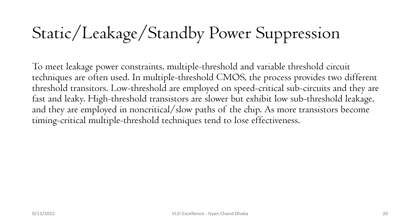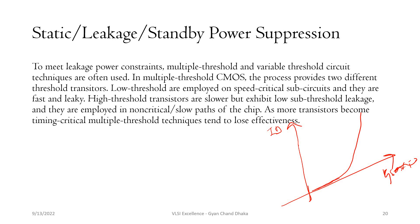Now, let us see static or leakage or standby power suppression. There are many sources of leakage power dissipations. Here, we will consider the sub-threshold leakage. Let us understand the input characteristics of a transistor. If we draw the input characteristics, we plot ID versus VGS. The characteristics show the threshold voltage, where ideally the transistor starts conducting when the gate voltage reaches the threshold voltage. But before that, during weak inversion, a small channel has built and due to that there will be a small sub-threshold leakage current. Whatever current flows due to the weak inversion region is the sub-threshold current.